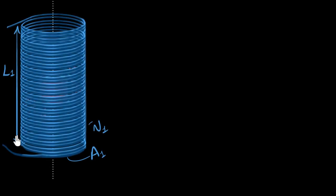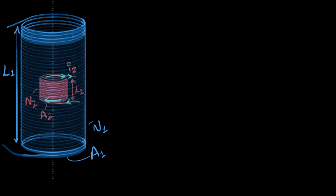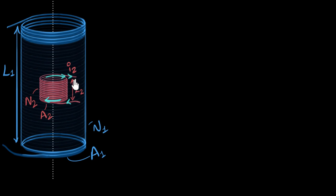Say we have a long solenoid of length L1 with N1 number of turns and coil area A1. Now there's another tiny solenoid inside, coaxial — they have the same axis — with area A2, N2 number of turns, and length L2. Now if that tiny solenoid is carrying a current I2 and it's changing, there will be an EMF induced in the larger solenoid. We call this mutual induction.